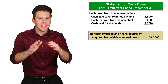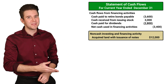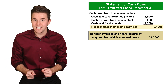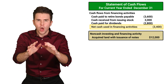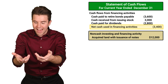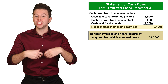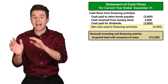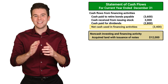To wrap it up, the cash flows from financing activities section of our statement of cash flows will look something like this. In total, we report net cash used in financing activities of $3,400. The negative number, or parentheses around the number, tell us that we had more outflows of cash than inflows. This is why we report net cash used in financing activities, whereas if we had a positive cash flow, we would say net cash provided by financing activities.